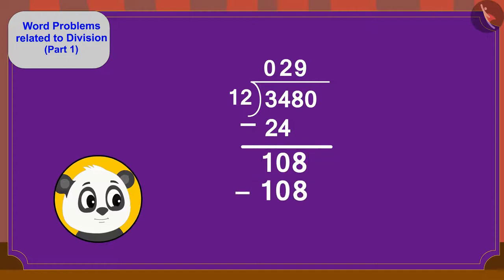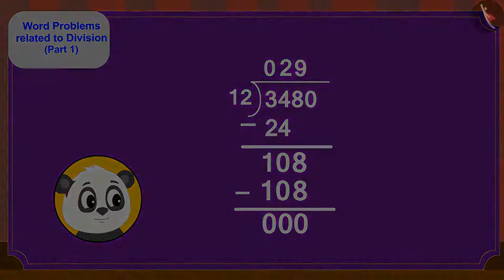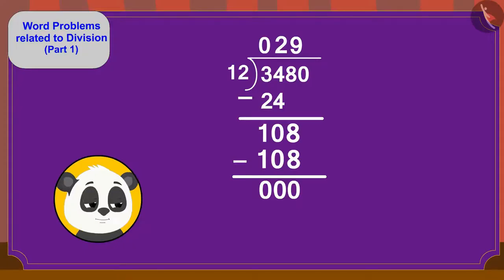We will write 108 minus 108 equals 0. Now, we will write the last digit, 0, down here next to this 0. Can we divide 0 by 12? Yes.